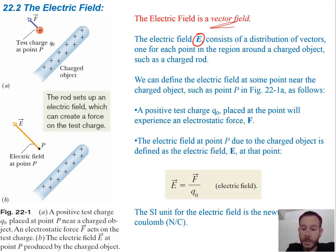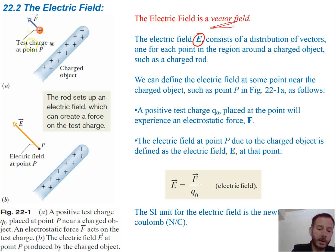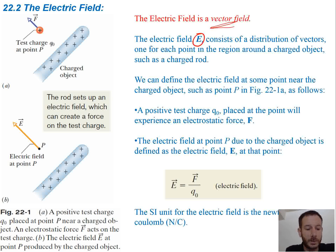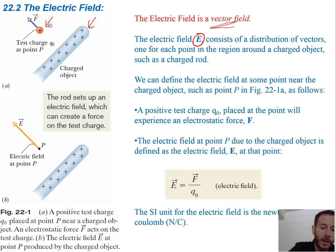We can define electric field at some point near the charged object, such as point P in figure 21A, as follows. Our electric field is going to be in the direction of the force if you had a positive test charge. So if you have a positively charged rod and a positive test charge, the direction is going to be away from the rod.